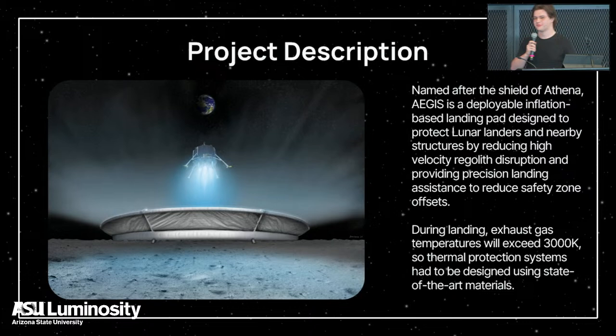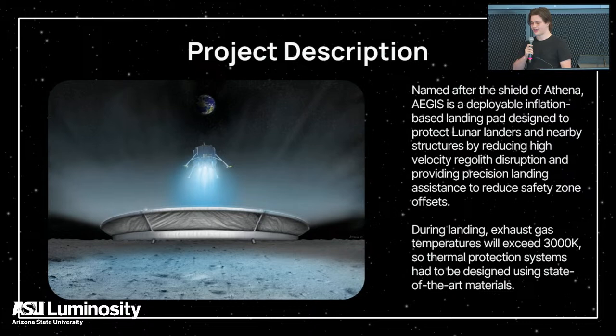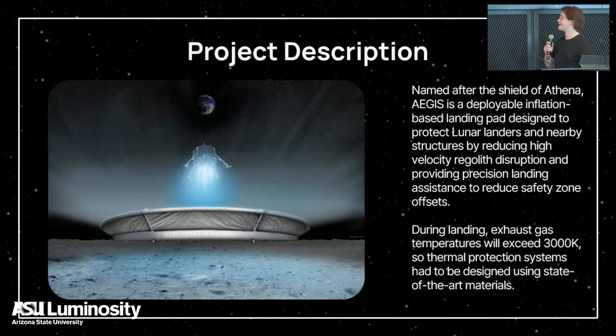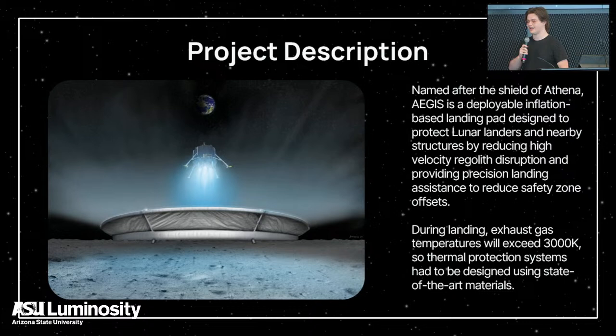Our solution is called Aegis, named after the Shield of Athena, and it's designed to be an inflatable landing pad for the Moon. On top of regular lunar constraints and tough environments, we're also designing a system that deals with landing conditions including temperatures up to 3,000 degrees Kelvin and interactions with regolith during landing. A lot of fun problems to solve, and one of our first steps was doing a lot of simulation.